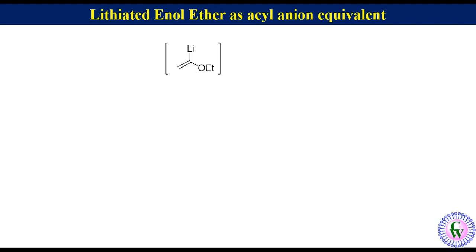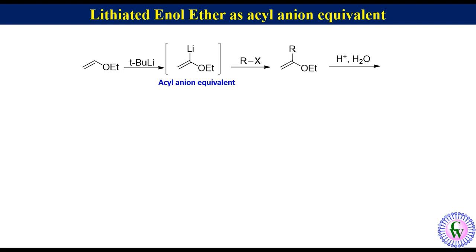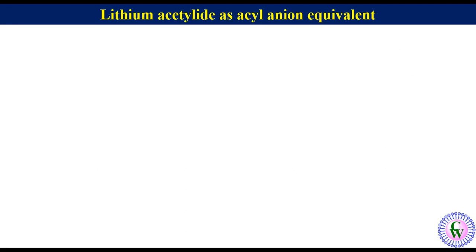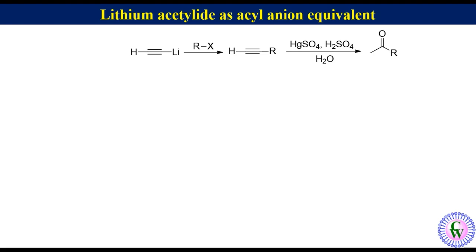The lithiated salt of an enol ether acts as an acyl anion equivalent. It can be generated by the reaction between an enol ether and t-butyllithium. It reacts with an alkyl halide to produce a new substituted enol ether, which after acidic hydrolysis gives a ketone. The lithium salt can also undergo 1,2-addition with an aldehyde or ketone. Lithium acetylide reacts with an alkyl halide to produce a monosubstituted acetylene, which after hydration in the presence of mercuric ion under acidic conditions gives a ketone. The lithium salt can undergo 1,2-addition with an aldehyde or ketone to produce a propargylic alcohol derivative, which after hydration gives an alpha-hydroxy ketone.